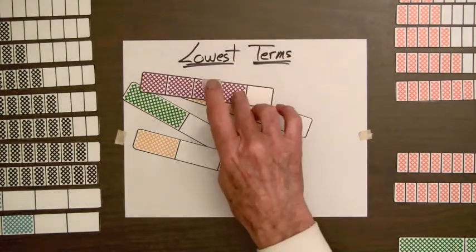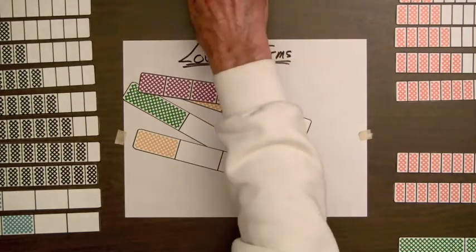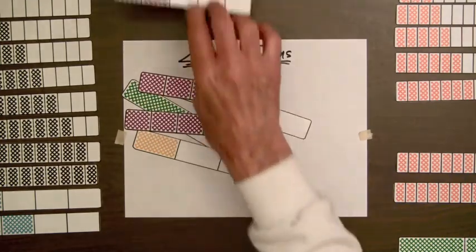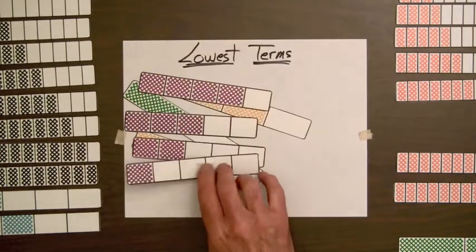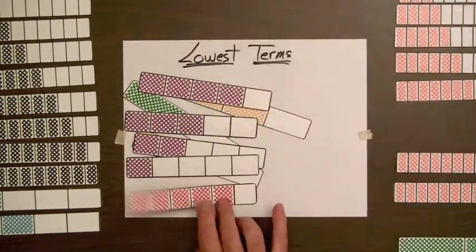four-fifths, three-fifths, two-fifths, one-fifth, five-sixths, and so on.